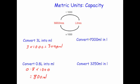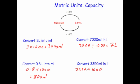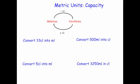Now let's convert milliliters to liters. Convert 7000 milliliters into liters: to go from milliliters to liters you divide by 1000, so 7000 divided by 1000 equals 7 liters. Finally, convert 3250 milliliters into liters: 3250 divided by 1000 equals 3.25 liters.